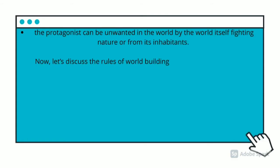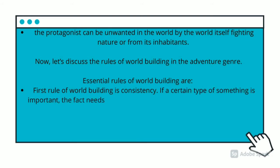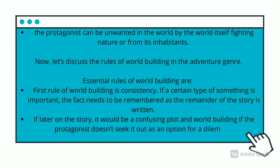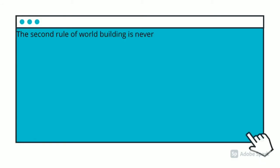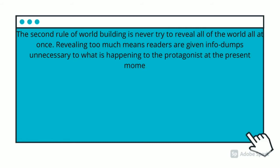Now let's discuss the rules of world building in the adventure genre. The first rule of world building is consistency. If a certain type of element is important, those facts must be remembered throughout the rest of the story. If later in the story a previously established rule is ignored, it will create a confusing plot hole. The second rule of world building is never try to reveal all the world at once. Revealing too much gives readers information unnecessary to what is happening to the protagonist at the present moment.